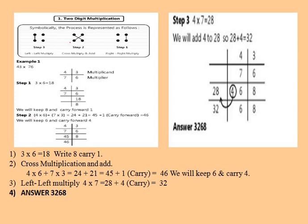The second step: we cross multiply and add. So we take 4 into 6 plus 7 into 3, which gives us 24 plus 21, equal to 45. Then we add the carry of 1, so we get 46. Keep 6 and carry forward 4.